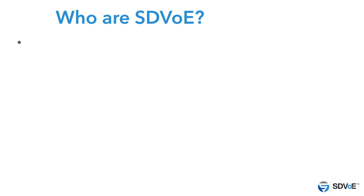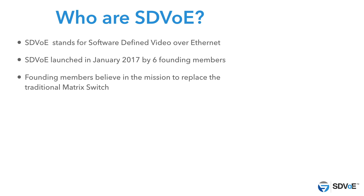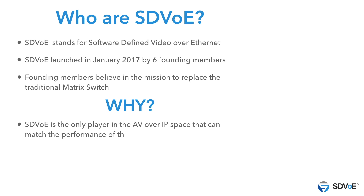SDVoE stands for Software Defined Video Over Ethernet. The SDVoE Alliance was launched in January 2017 by six founding members sharing a common mission: to accelerate the replacement of point-to-point connectivity and the Matrix Switch with Ethernet-based transport systems. SDVoE technology is uniquely suited for this displacement because SDVoE is the only technology in the AV over IP space that can match the raw performance of a Matrix Switch.